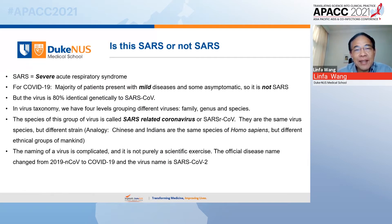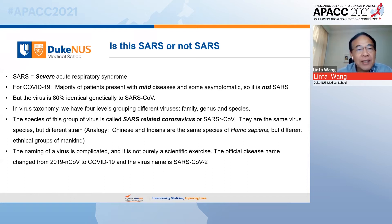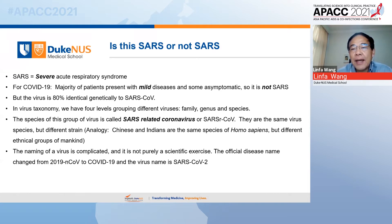The first topic is: SARS or not SARS? When COVID-19 first emerged, that was the question. SARS is a severe acute respiratory syndrome, but for COVID-19, the majority of patients present only mild disease and some are asymptomatic — so it's not SARS. But at the virus level, the COVID-19 virus is 80% identical to SARS-CoV-1. In virus classification, we have families, genus, and species. The species for this group is called SARS-related coronavirus. They are the same virus species but different strains. So COVID-19 is SARS, if you look at the scientific classification.